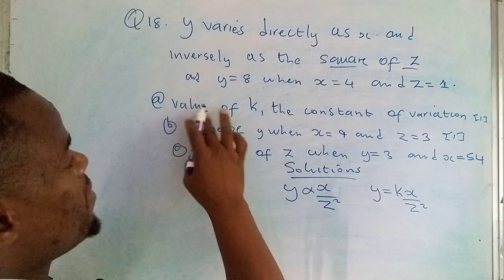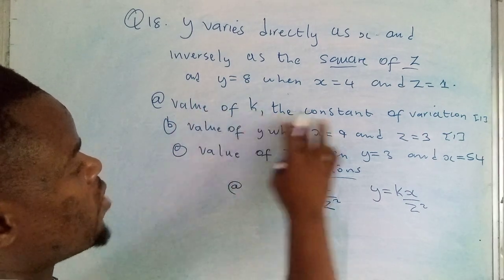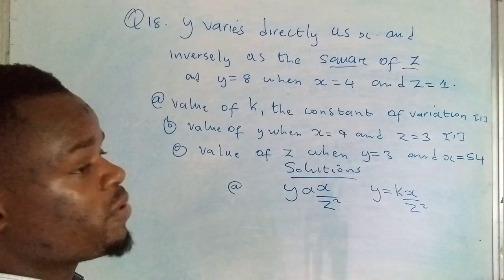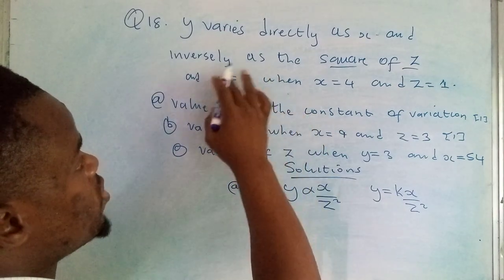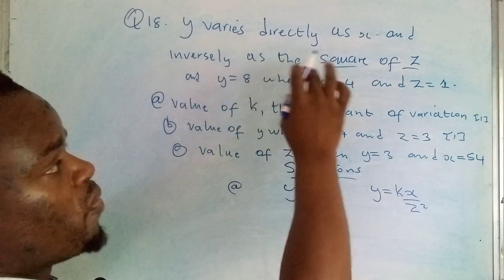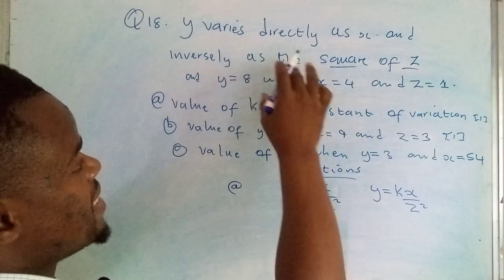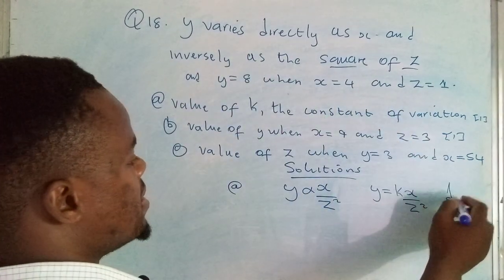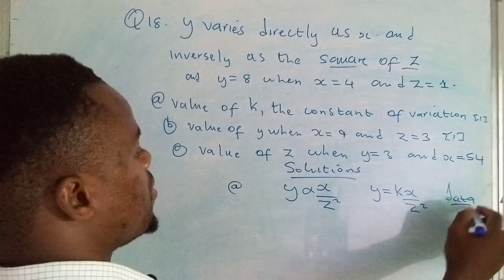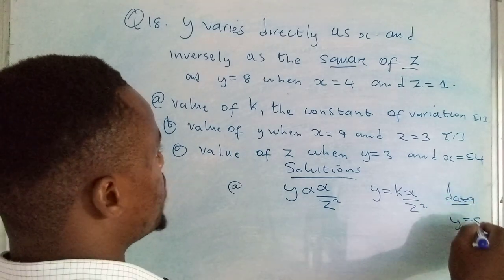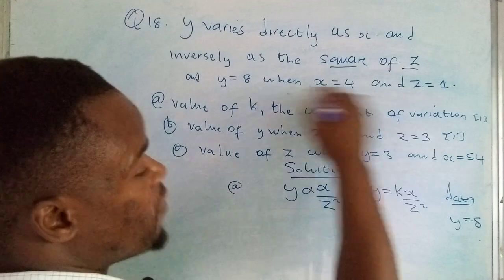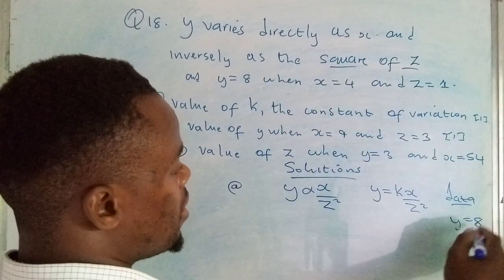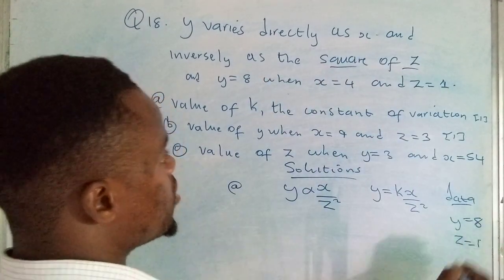They're saying determine the value of k, the constant of variation. For you to determine k, you have to make use of the information which you've been given in the leading statement. We can collect data here: y is equal to 8, and z is equal to 1.